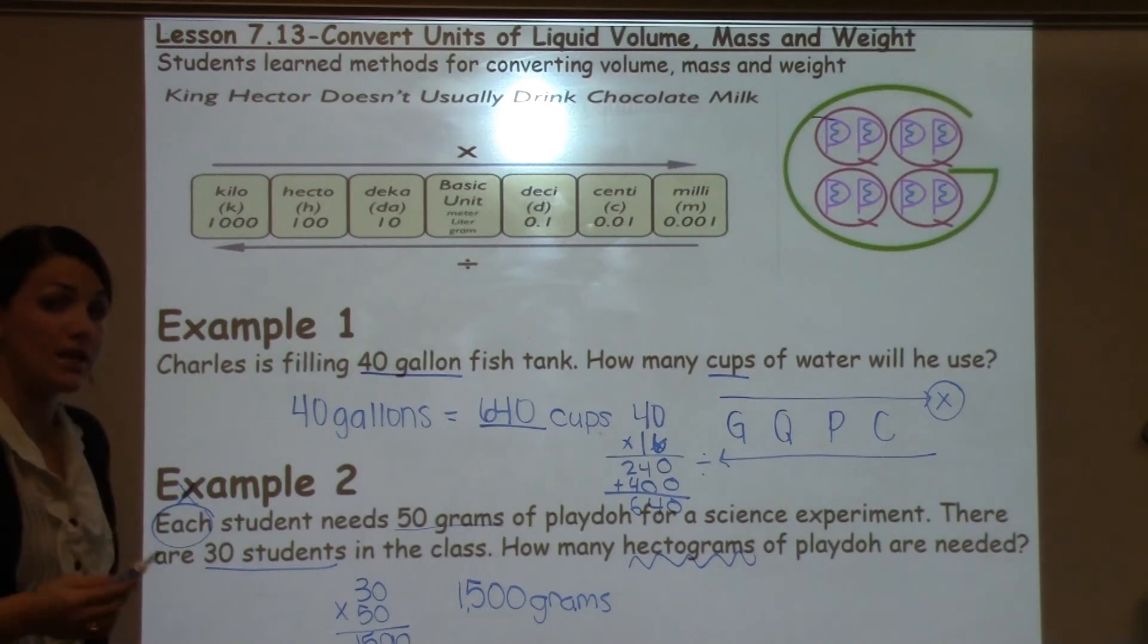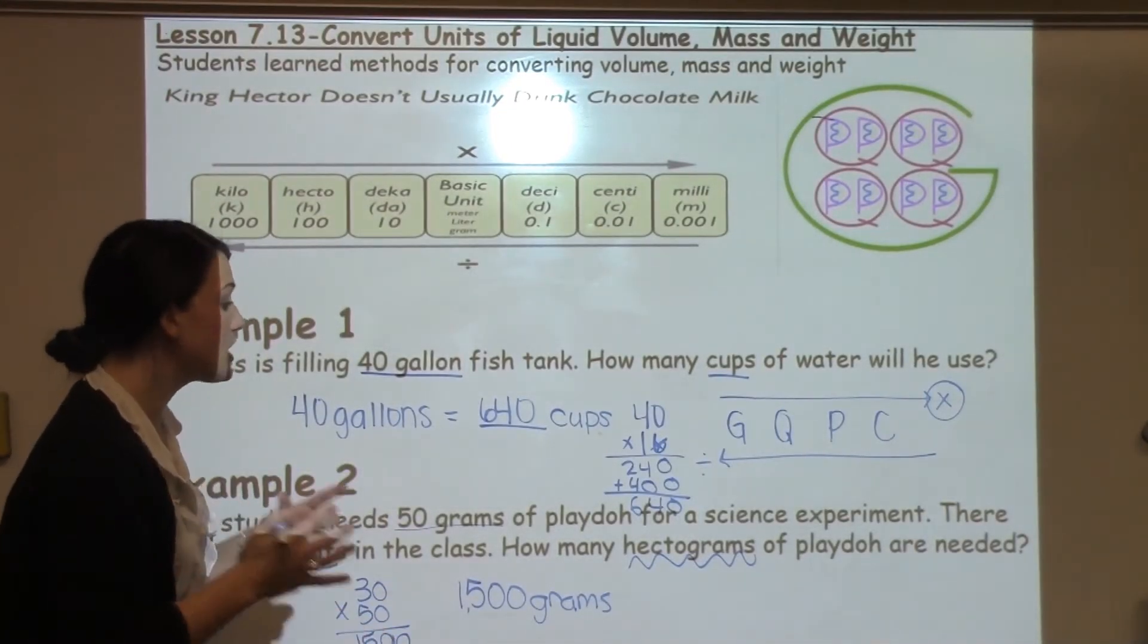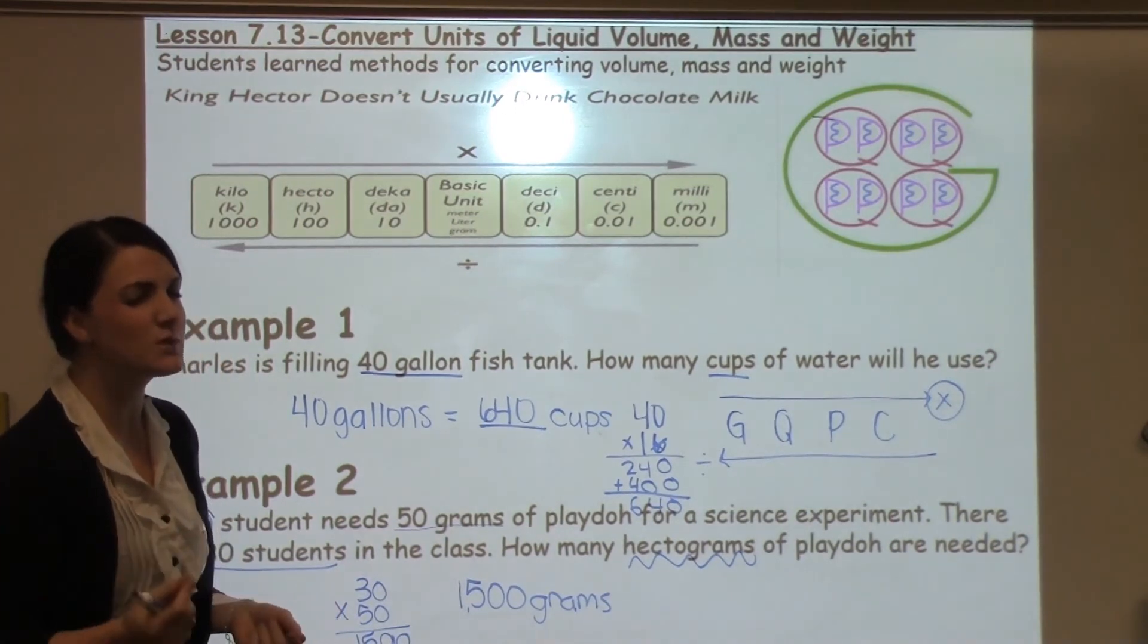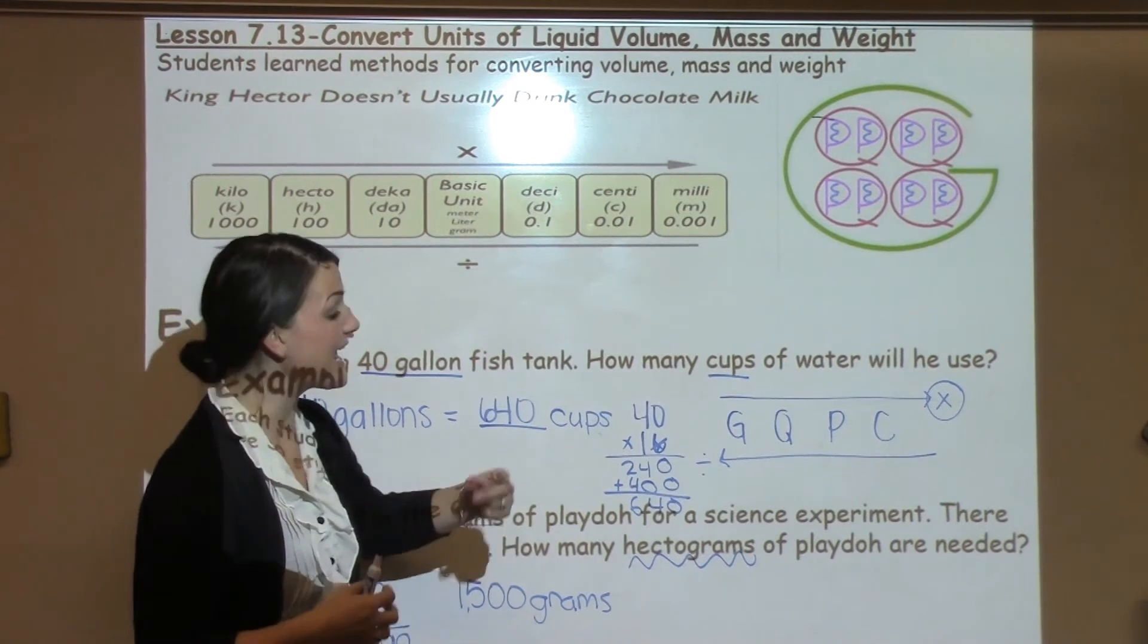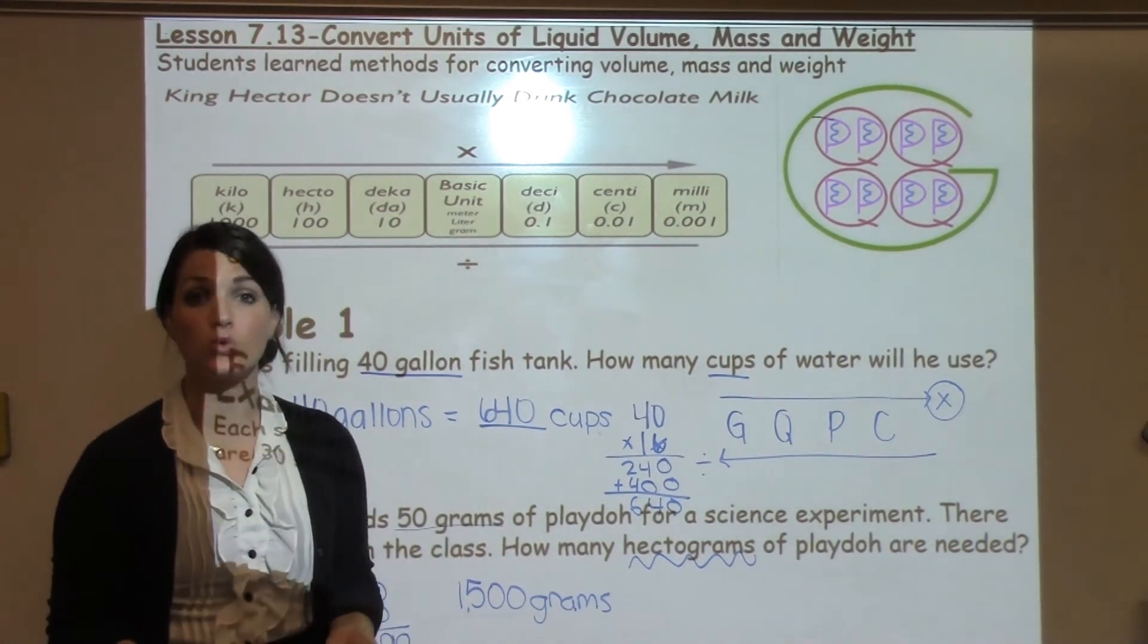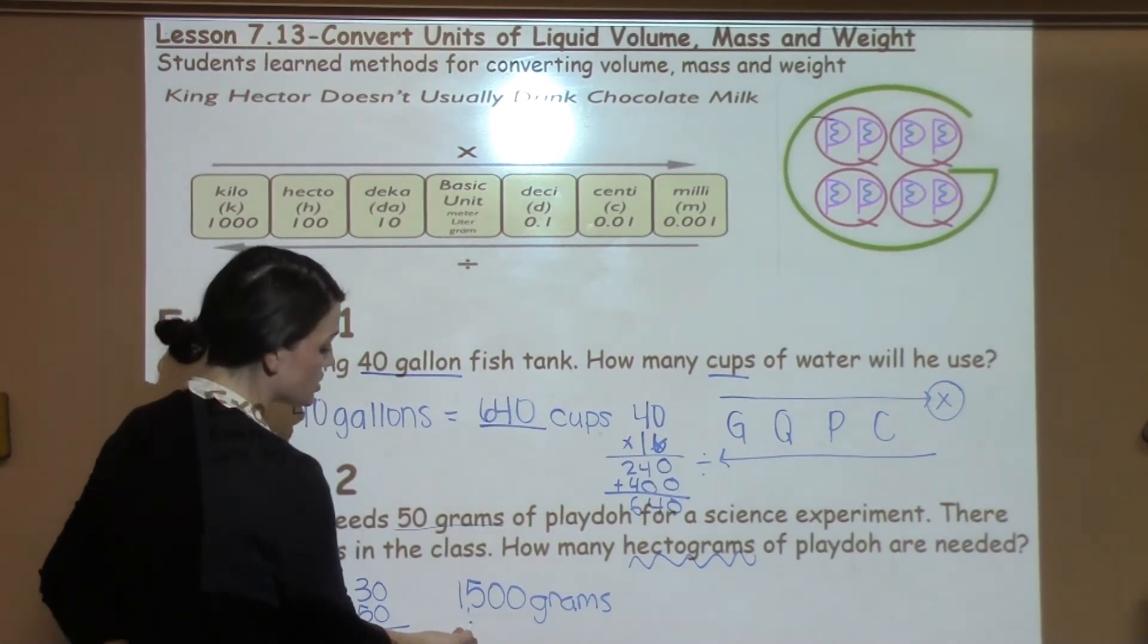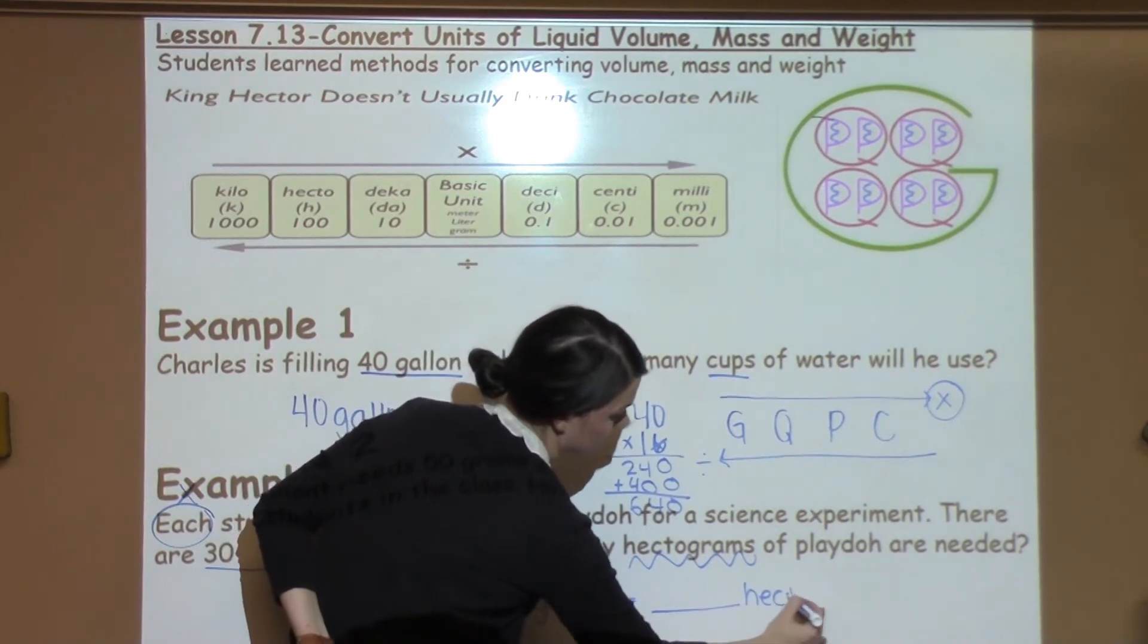Now the tricky part with two-step problems is that a lot of students want to be done with this first part of the answer. So always encourage them to go back and see, did you really answer the question that was being asked? Because the question says how many hectograms of play-doh are needed, and right now I have how many grams are needed. So I need to change 1500 grams into hectograms.